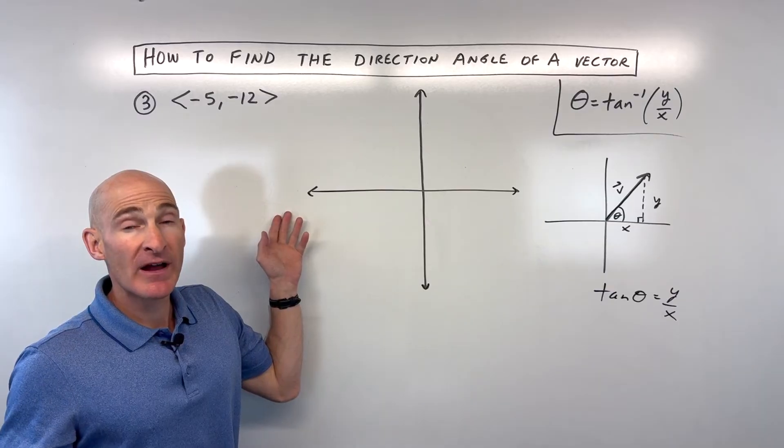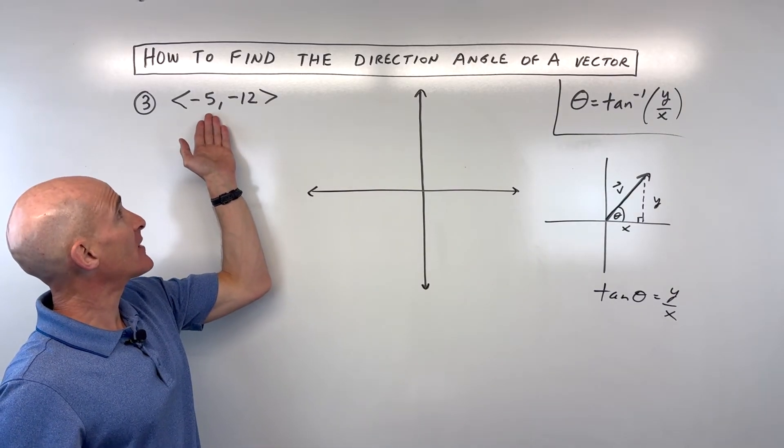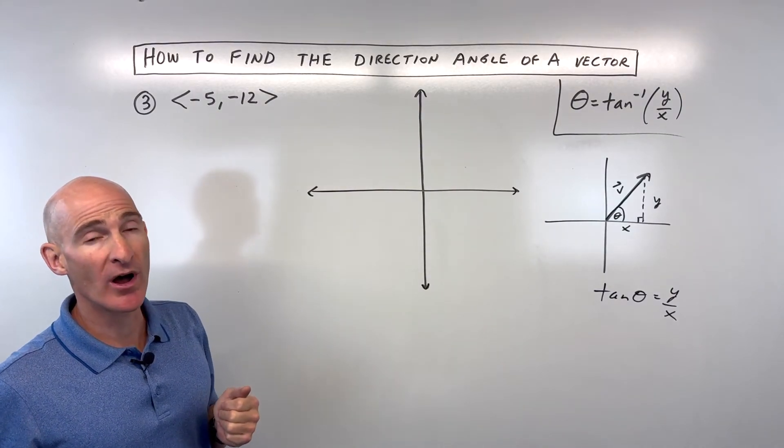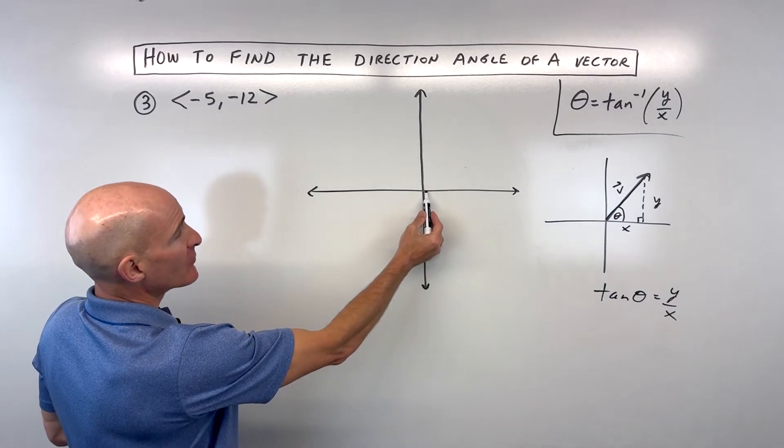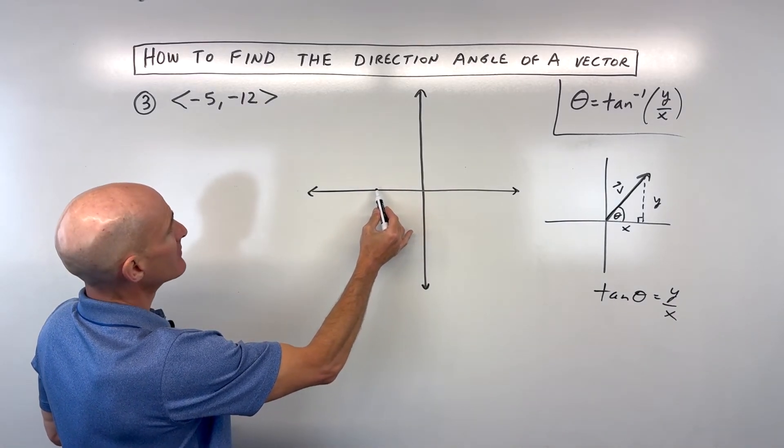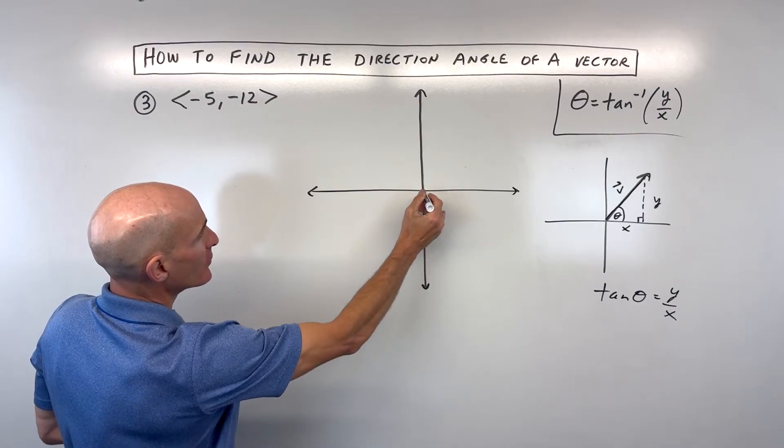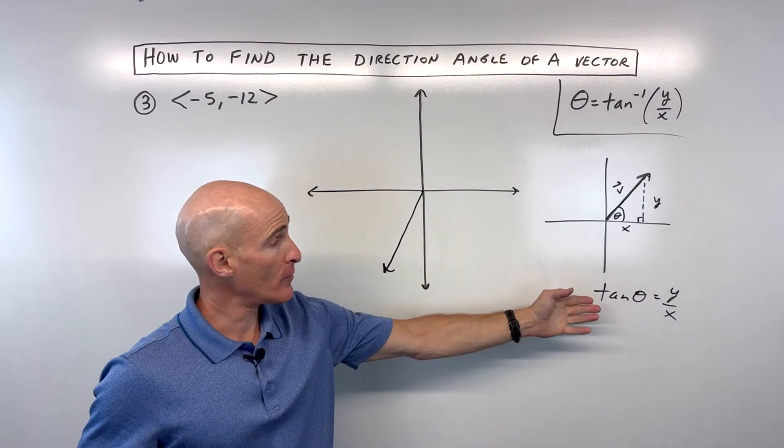See if you can do this one on your own. See if you can find the direction angle for number 3, this vector, <-5, -12>. So, negative 5, negative 12 means you're going left 5, down 12. You'd be somewhere over here. That's your vector.